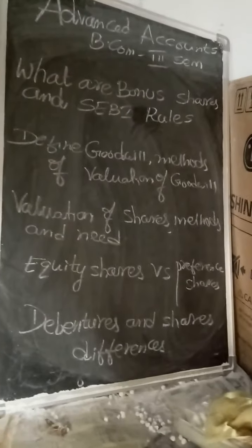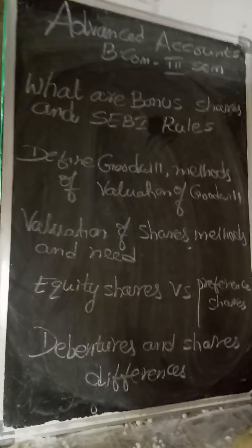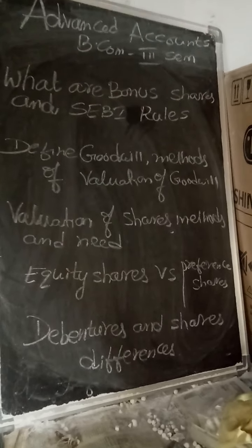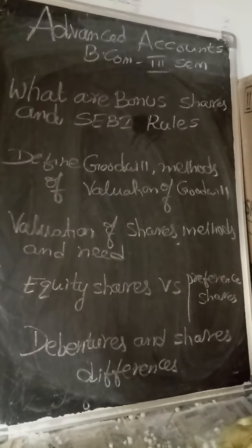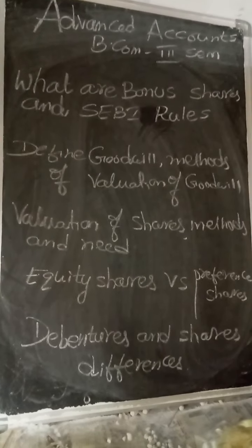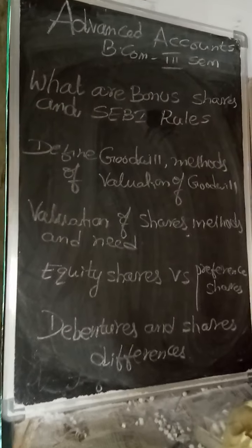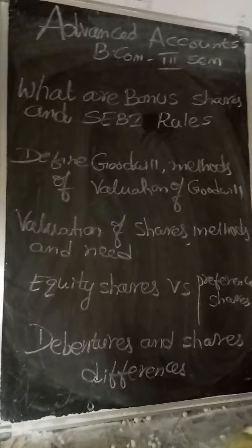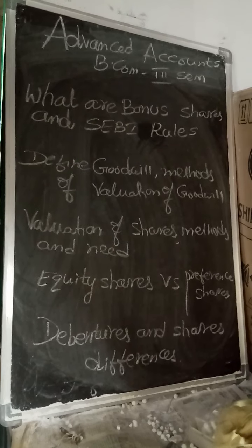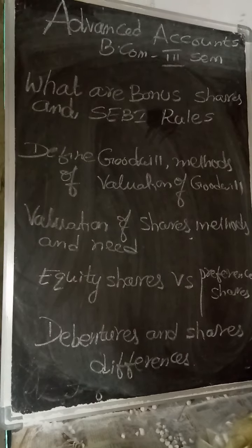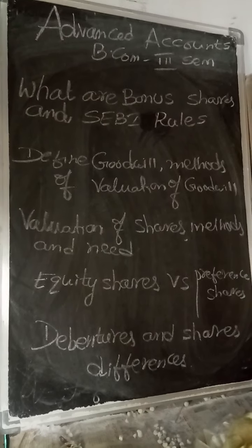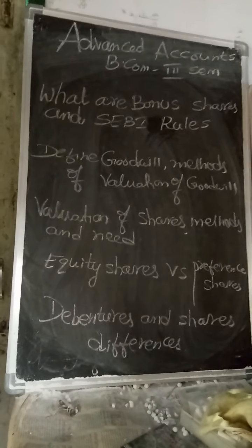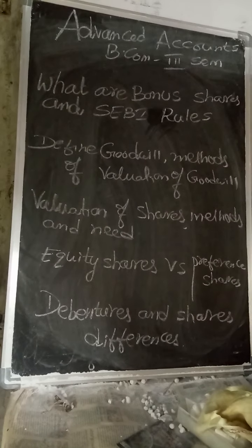Then, valuation of shares. A share is a part of a company's capital. There are two kinds of shares: equity shares and preference shares. Equity shares are listed in stock exchanges. There are situations where shares need to be valued, such as when you want to invest in a company or when one company is amalgamating with another. Methods include the net assets method or intrinsic value method, the earnings value method, and the dual value method.